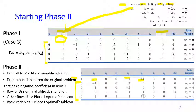Once the phase two table is set up, we need to verify that the basic variables are still the same as in the optimal phase one table — that is, a1, a2, x3, and x4 are still basic variables. Fortunately, after replacing the objective function with the original, a1, a2, x3, and x4 remain basic variables and the table is still in canonical form. If that were not the case, we would need to perform row operations to restore canonical form before proceeding.